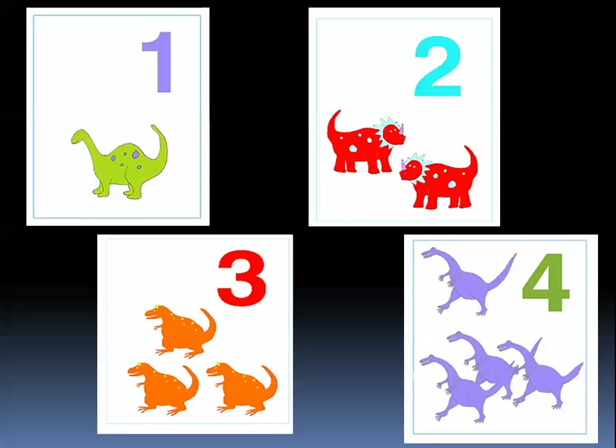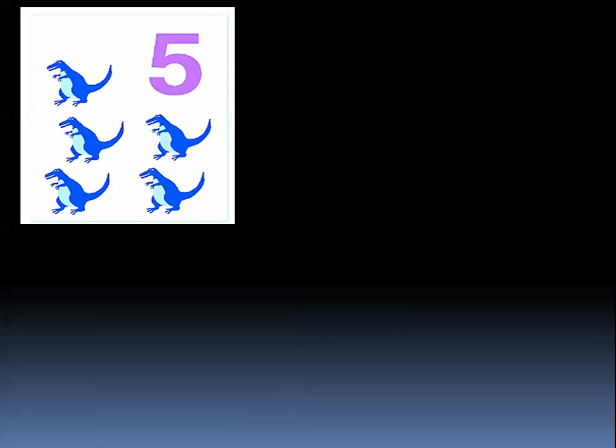These are four dinosaurs. So we have number one, two, three and four. After four we have number five. This is number five. Let's count: one, two, three, four, five.